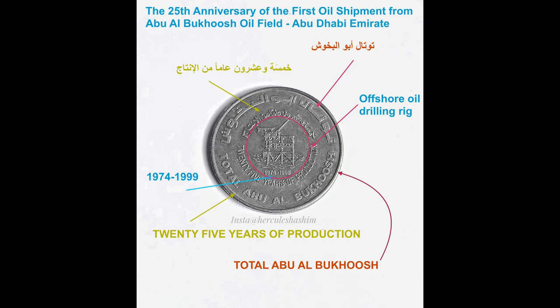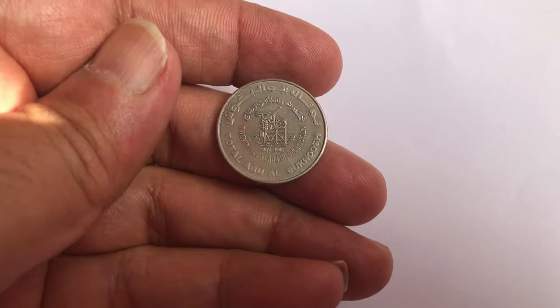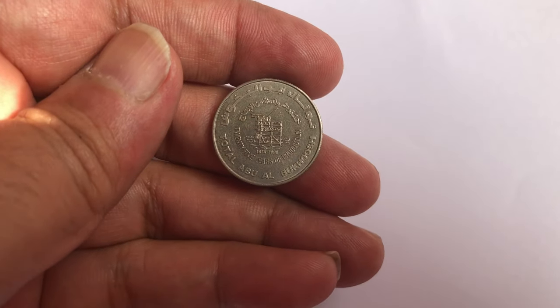This is the back side. There is a photo of a rig. It is written 1924 to 1999, in Arabic and English, 25 years of production. It also shows petroleum and total Abu al-Bukosh.